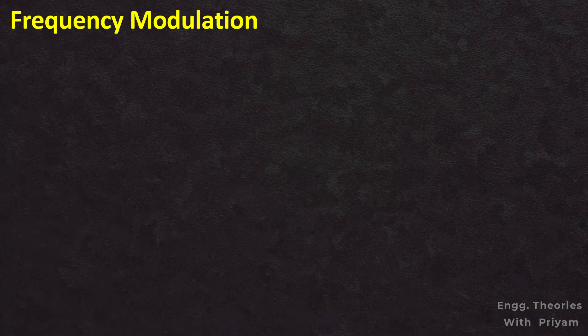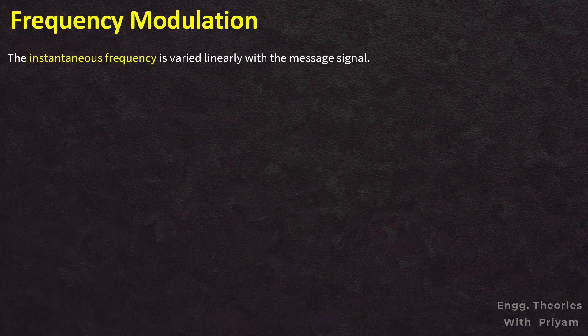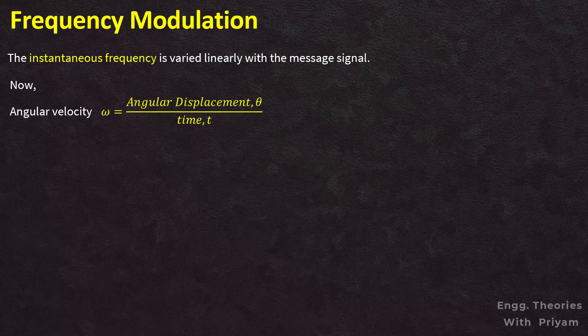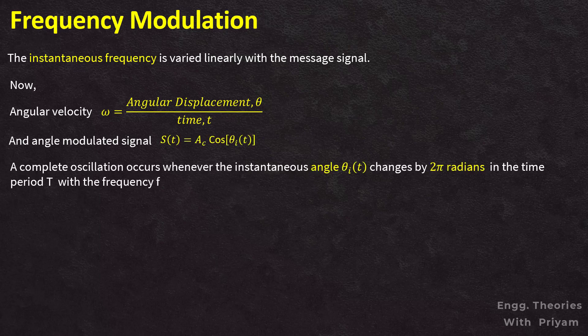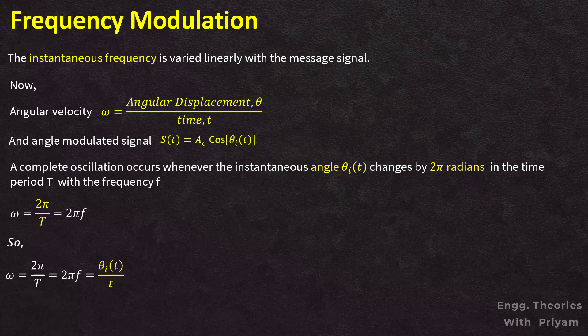For frequency modulation, the concept of instantaneous frequency plays a vital role — the instantaneous frequency is varied linearly with the message signal. We know that angular velocity ω = θ/t, and a complete oscillation occurs when the instantaneous angle θi(t) changes by 2π radians in time period T. So ω = 2π/T = 2πf, giving frequency f = θi(t) / (2πt).